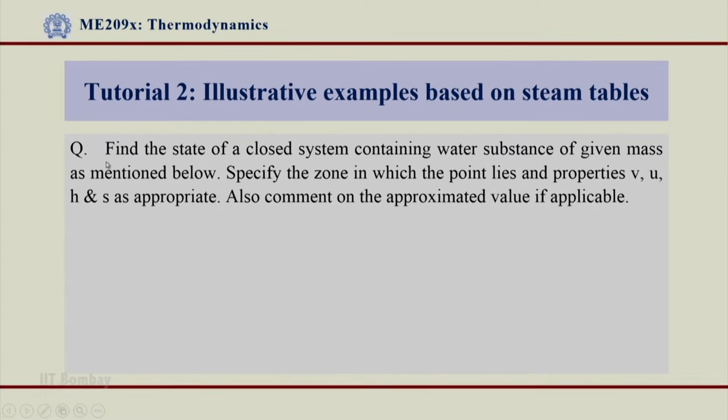The question is: find the state of a closed system containing water substance of given mass as mentioned below, which you can see in the next table. Specify the zone in which the point lies and properties v, u, h, and s as appropriate. Also comment on the approximation value if applicable.